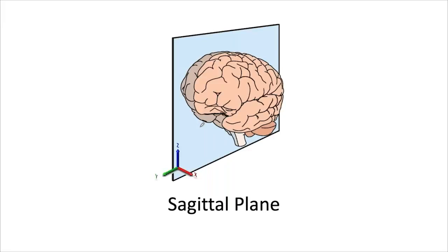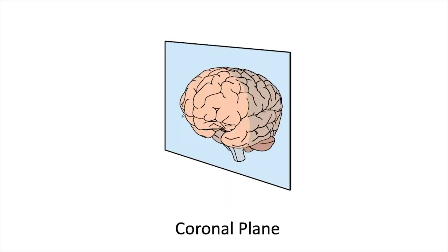We can fit a three-dimensional axis into this plane. Going toward the front is the y-axis, going to the lateral side is the x-direction, and going up is the z-direction. This is the coronal plane — figures sliced in this way are shown in a coronal view. Different coronal planes correspond to changing values along the y-axis.